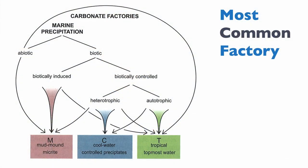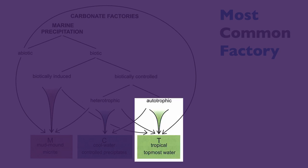We left off in the last lecture with the three major carbonate factories: the M factory, or Micrite Mud Mound; the C factory, or Cool Water Carbonate; and the T factory, the tropical upper-water factory. The T factory is the most abundant in terms of carbonate production, so we're going to focus primarily on the controls of the T factory, though I'll speak about the other factories in the next lectures.